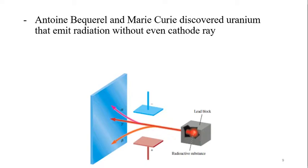In their experiments they used uranium in a lead box, allowing it to hit a large fluorescent screen. They found a deviation when an electric field was applied: some radiation deviated toward the negative side, some toward the positive side, and some remained in the middle of the screen.